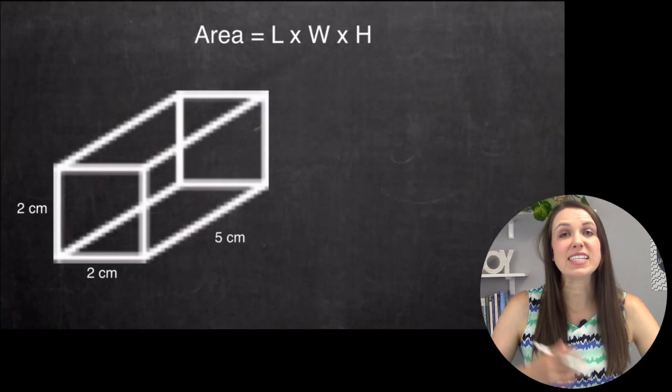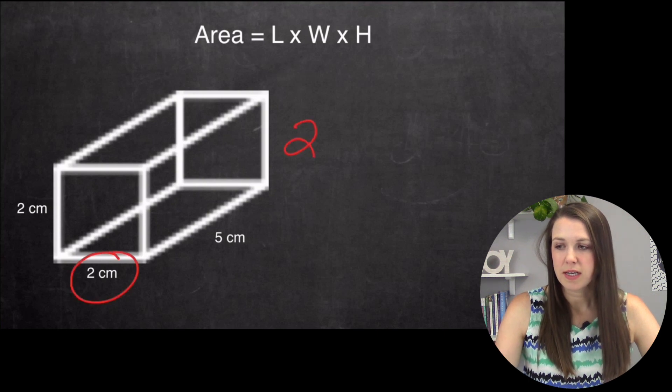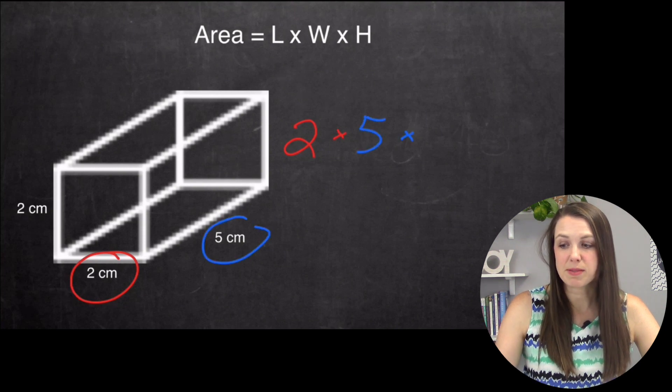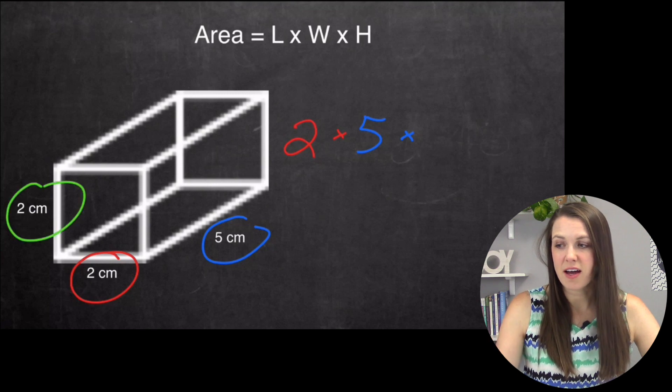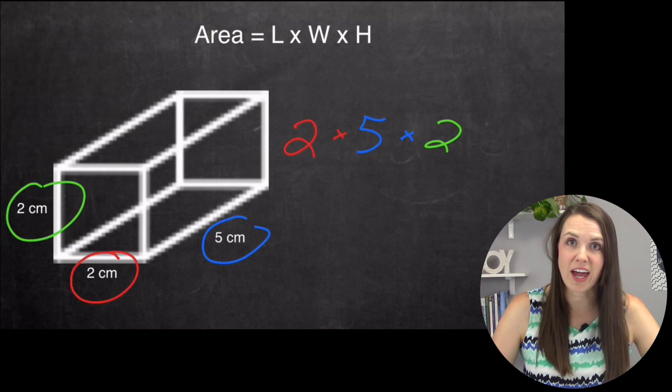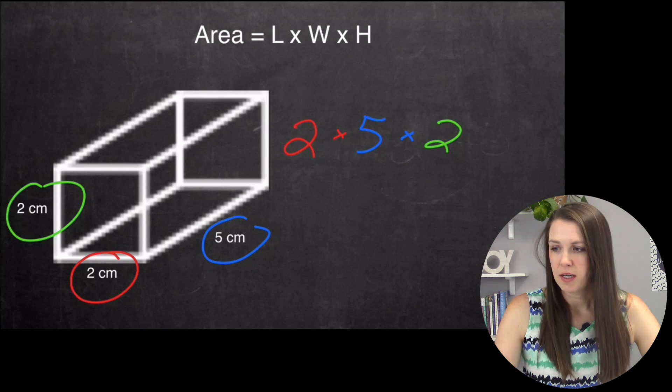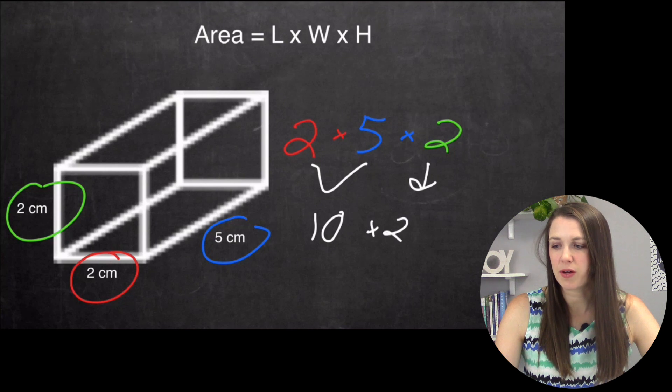It's the same principle: length times width times height. Here I have my length, which is two, times my width, which is five, times my height, which is another two. Now this time, I have to just multiply all three across. You can simply use your calculator, just bang, bang, bang, or else you can break it down piece by piece like I'm going to do here. Two times five is simply 10. Bring down that two, 10 times two is 20. So I'm at 20 centimeters cubed.